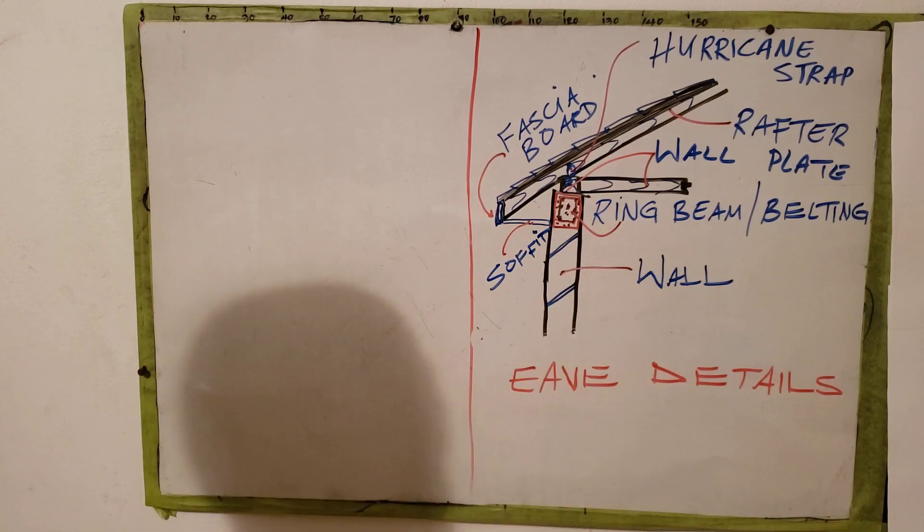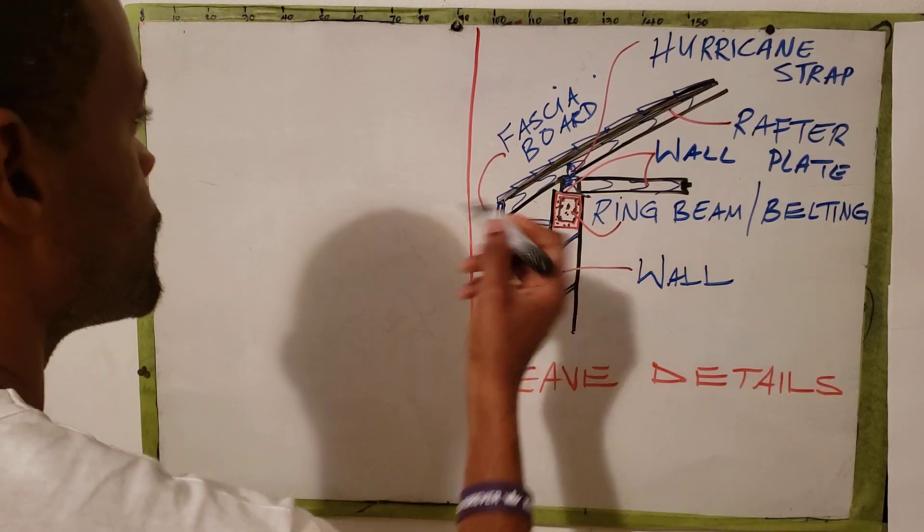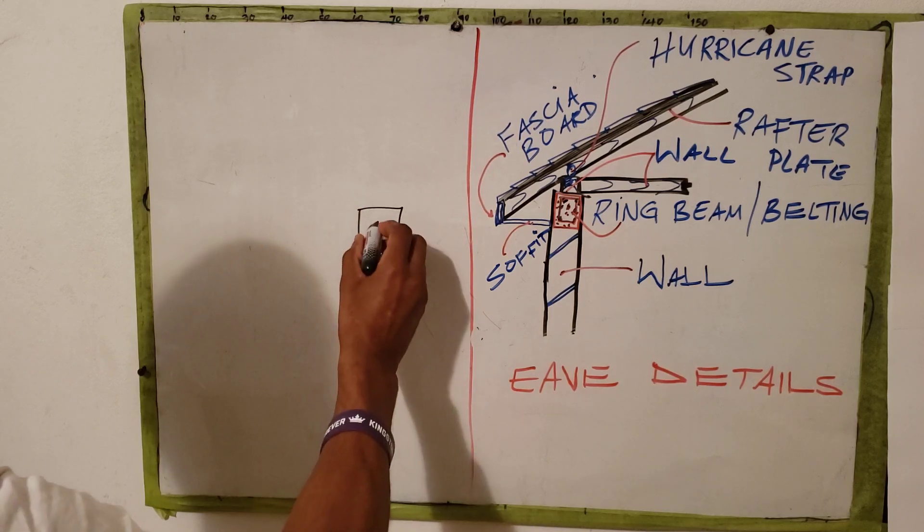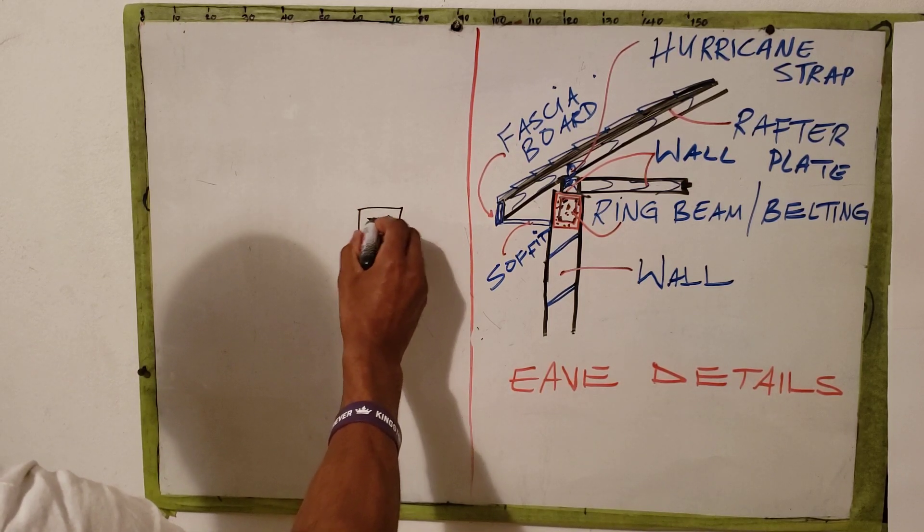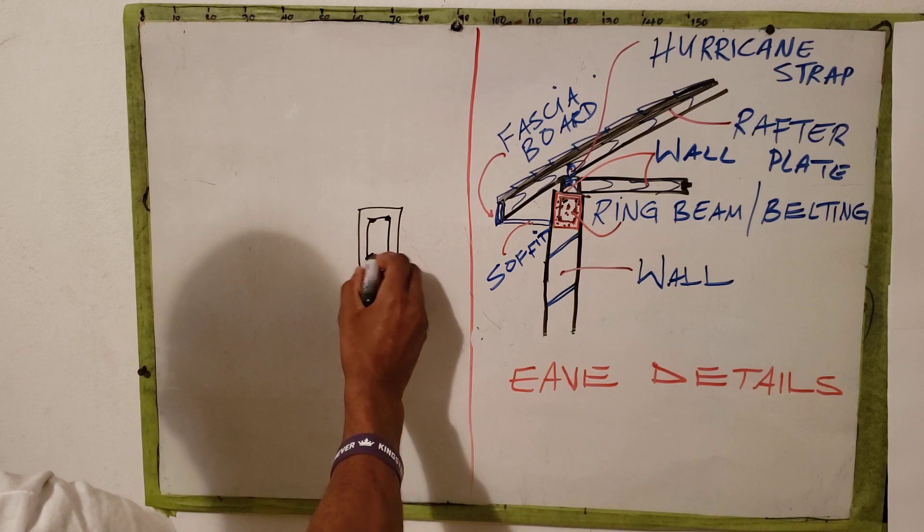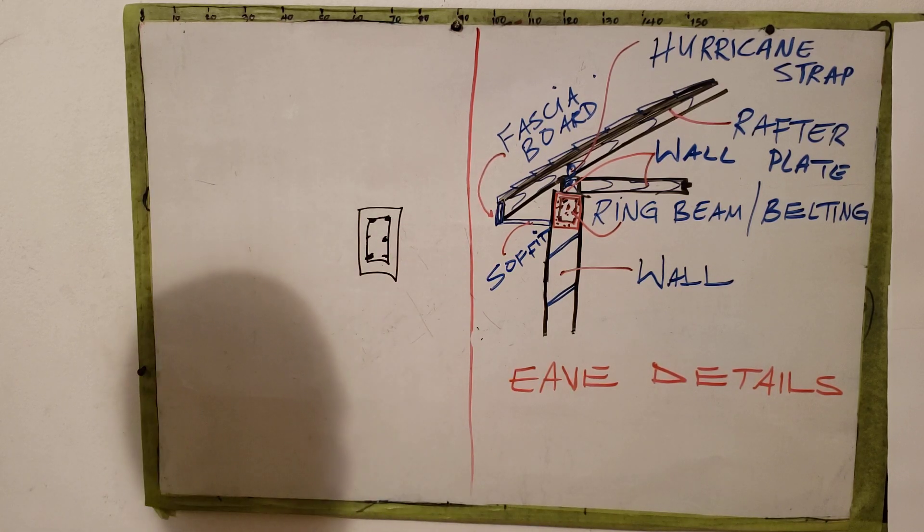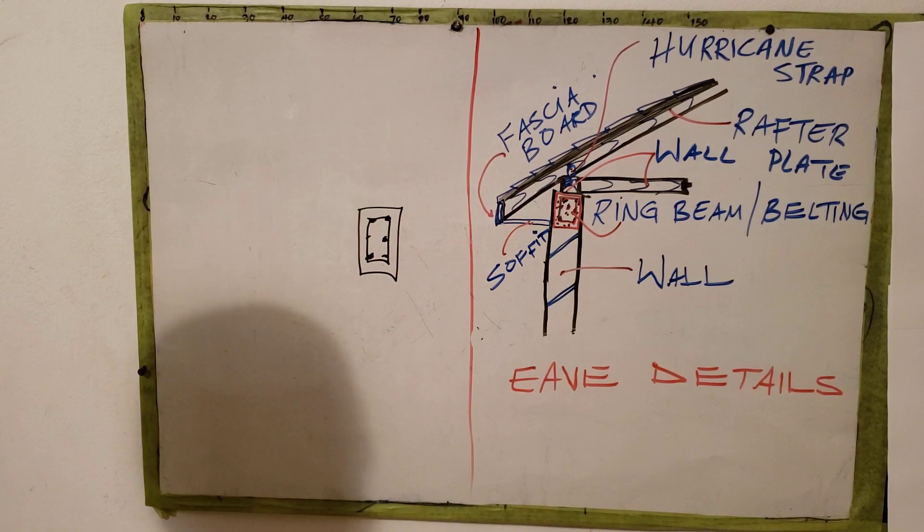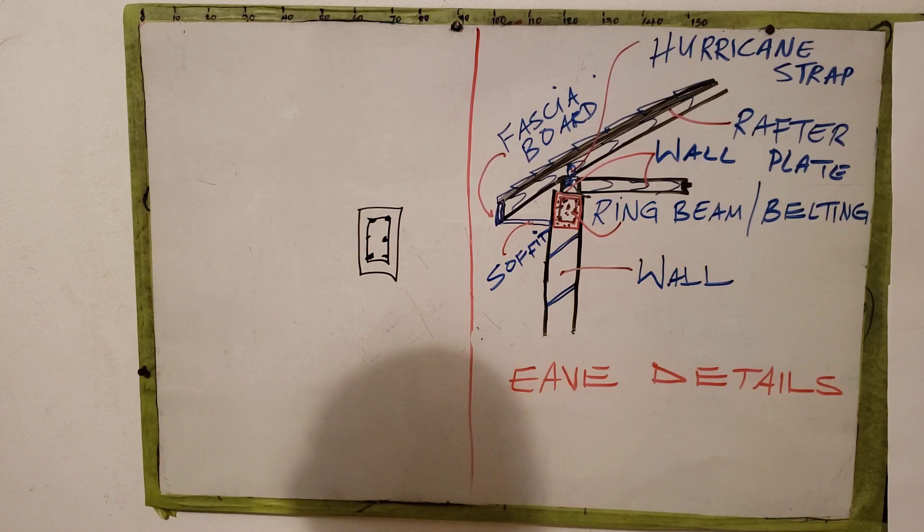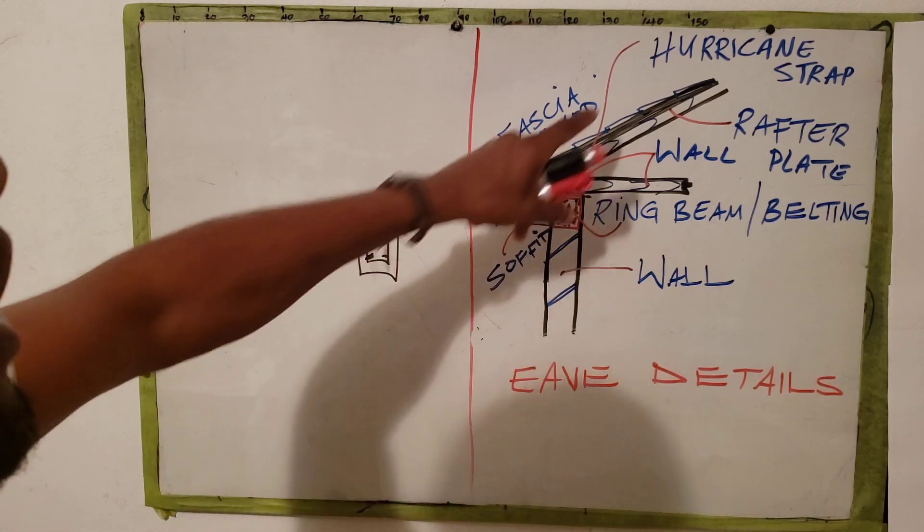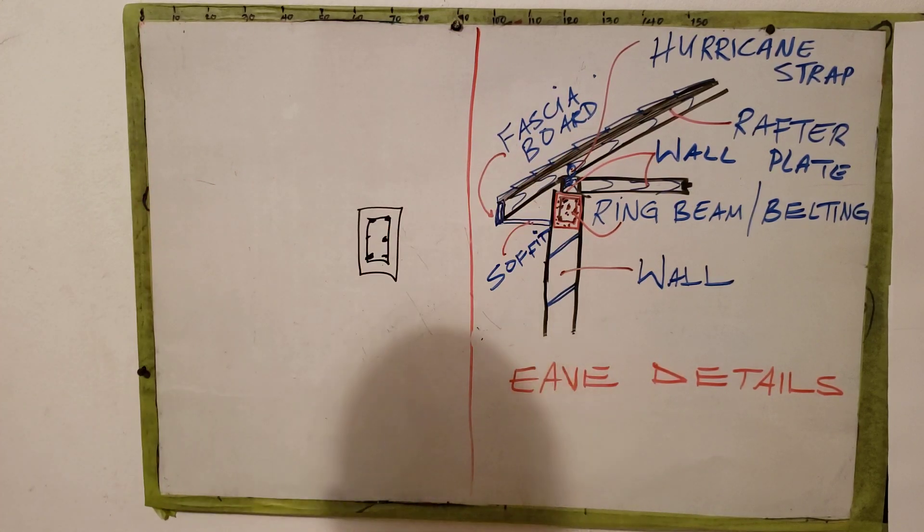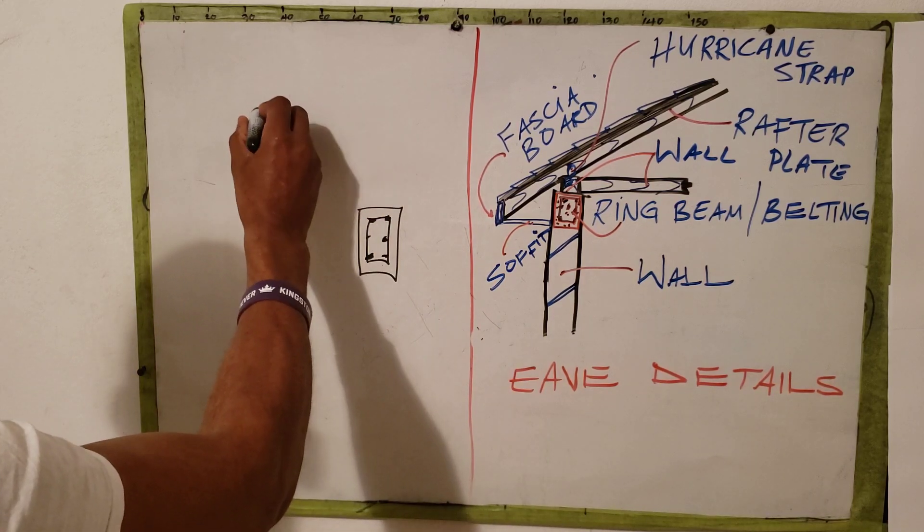You would also need to show the steel work or the ring beam. The ring beam has six half-inch credited steel bars, offset by 25 millimeters. That is also important to note. In some cases, they might ask you to show the hurricane strap. This part here is the hurricane strap, and the hurricane strap looks something like this.